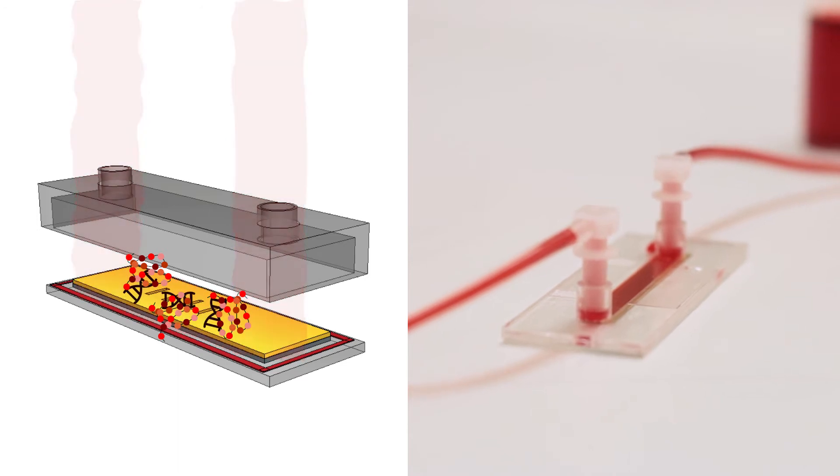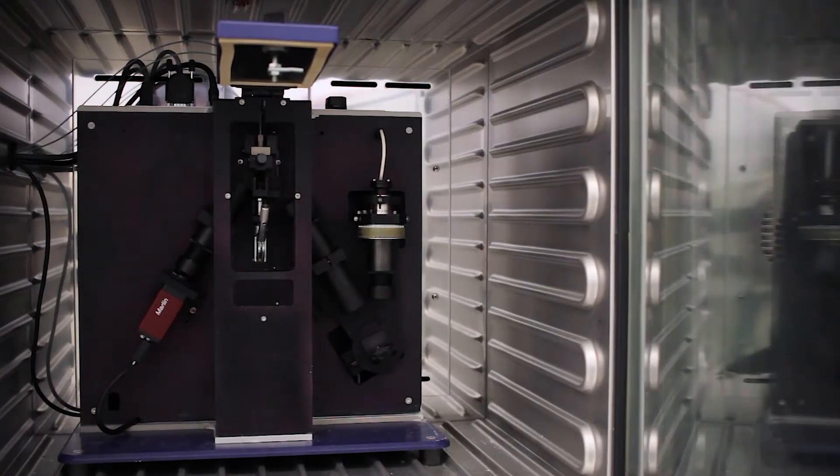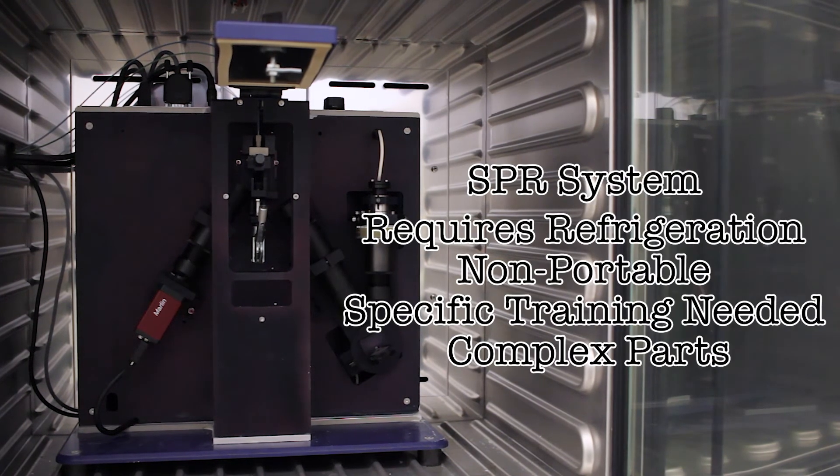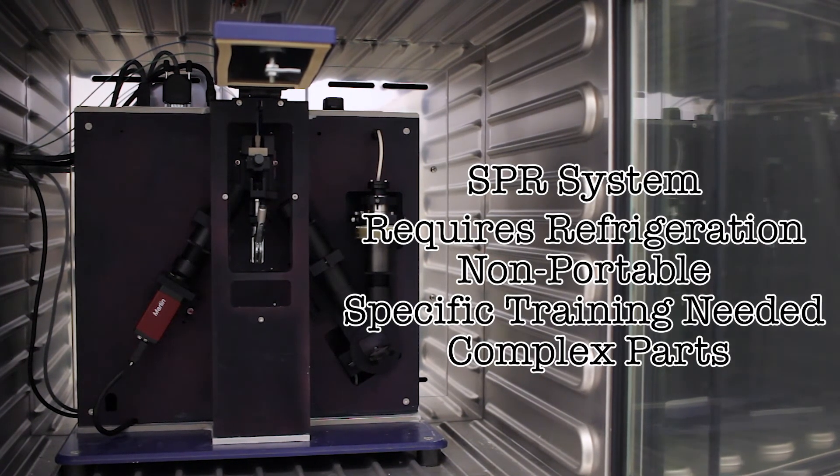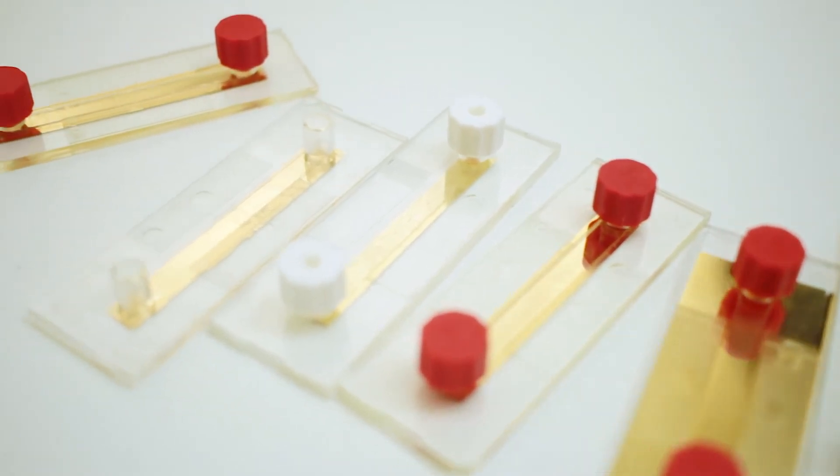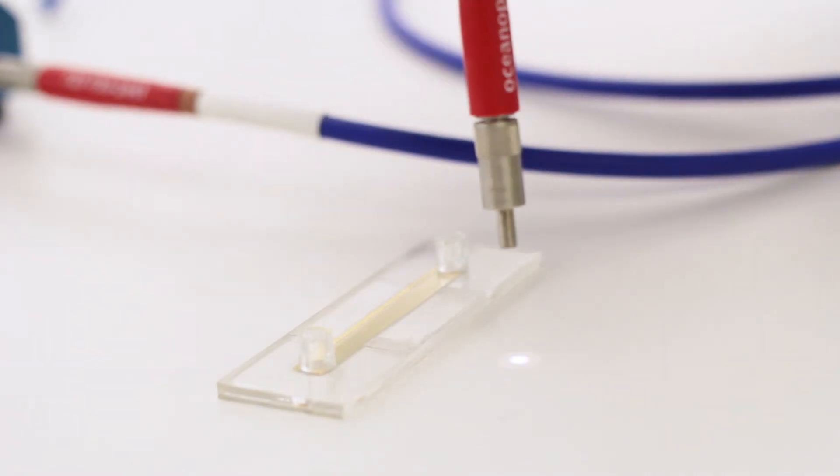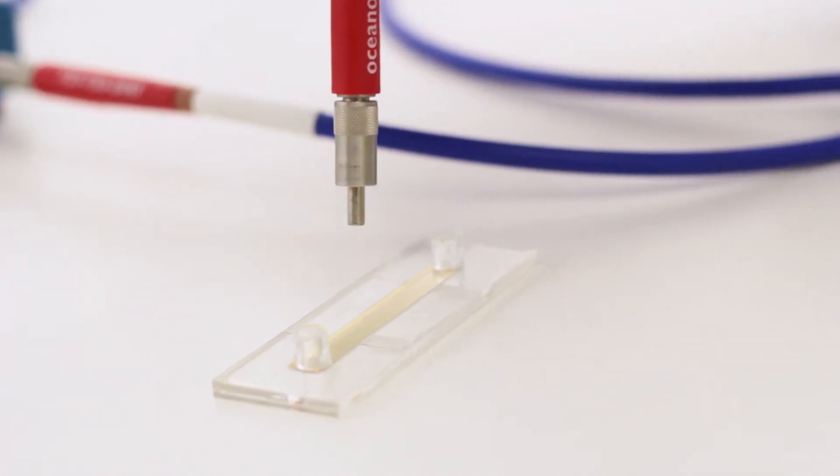The technique is very sensitive, but requires a laser and fancy optics yielding a large, expensive instrument. We made an inexpensive version to fit in the palm of the hand. Our nanostructures allow for the laser and optics to be replaced with a simple light bulb and camera, and allow for analysis of whole blood samples.